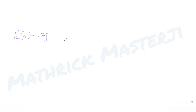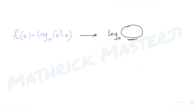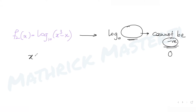Now for f2(x) = log base 10 of (x³ - x). This function becomes undefined when the argument of the log is negative or zero — log of a negative number is not defined, and log(0) is also undefined. So x³ - x must be strictly positive.